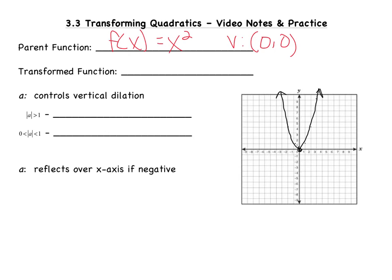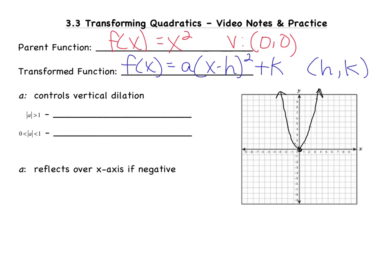Now the formula for the transformed function looks like this: f of x equals a times x minus h squared plus k, where h and k are the vertex.